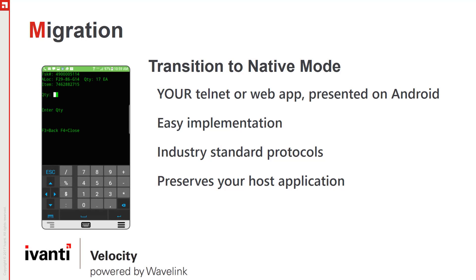In the migration phase, you start with a seamless migration to a new Android mobile computer running your existing client. Through Velocity, we call this native mode. Essentially, if it's a telnet app, it still presents itself on an Android device as a telnet green screen. Even though it's running Velocity, it still preserves the configuration settings and operational procedures you had in your application on older devices.